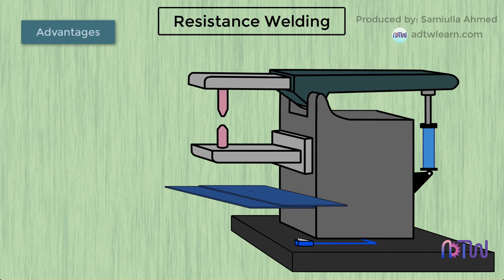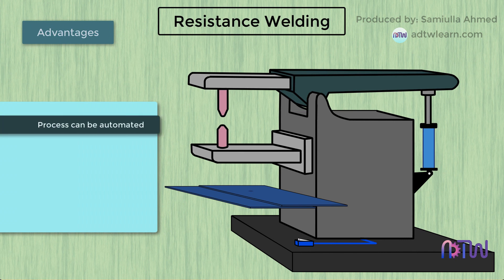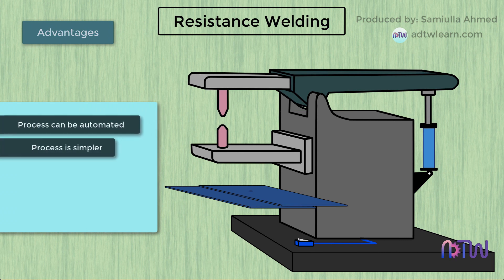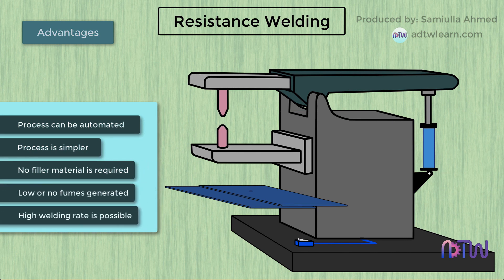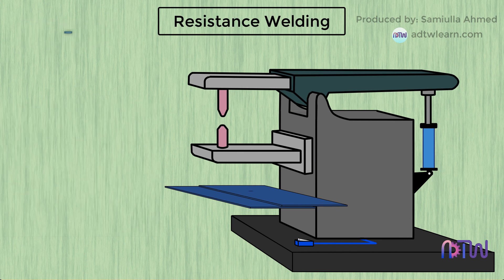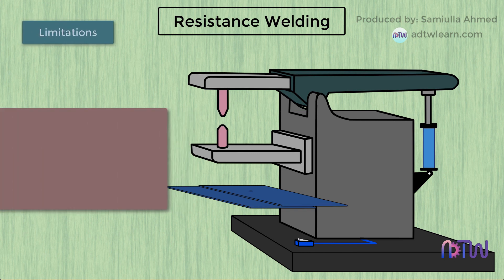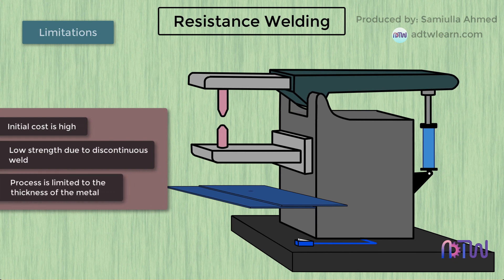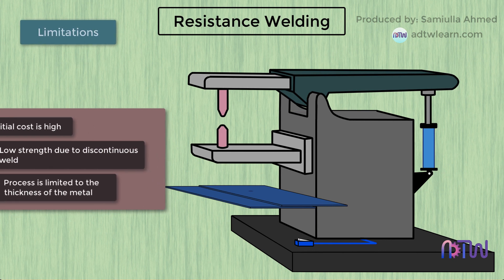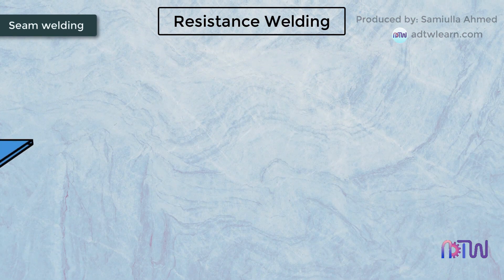Advantages of spot welding: The process can be automated, the process is simpler, no filler metal is required, low or no fumes are generated, and a high welding rate is possible. Limitations of spot welding: The initial cost is high, low strength due to discontinuous weld, and the process is limited to the thickness of the metal.